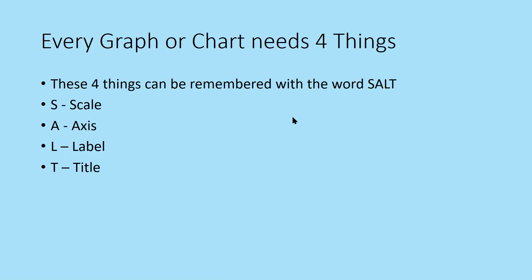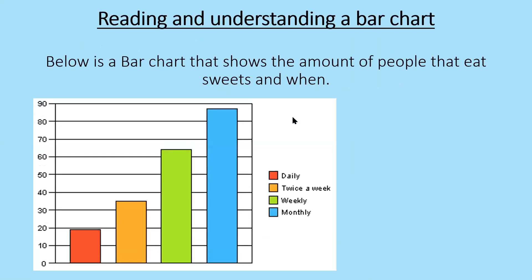Looking at this bar chart, notice that the y-axis goes up in tens with equal spacing, and the bars are all the same width with equal gaps between them. The key on the right-hand side is clearly visible. They could have written labels directly beneath each bar, but in this case they've chosen to use a key, which is perfectly fine.